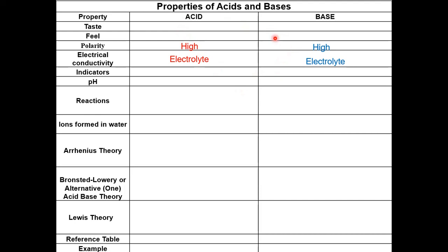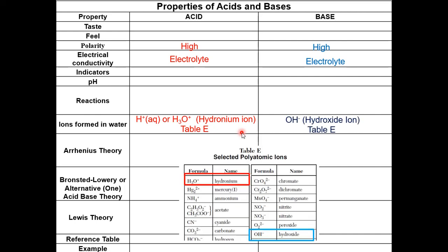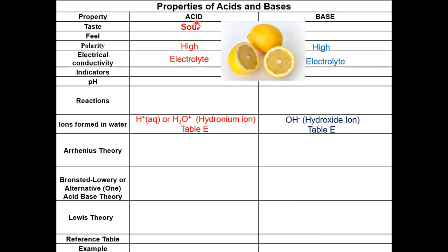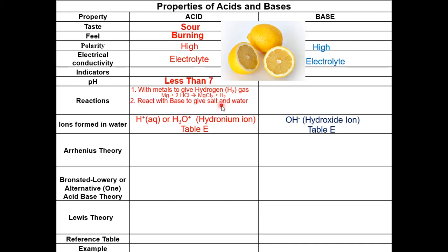Acids and bases have high polarity and they are both considered electrolytes. When an acid is dissolved in water, the ion that forms is H⁺(aq), or hydronium. For a base, it is hydroxide. Both these ions can be found on Table E in your reference table. Acids taste sour, like citric acid in lemons, and they have a burning feeling. Acids have a pH less than 7. When acid reacts with metal, they give hydrogen gas. Acids react with base to give salt and water, and acids counteract the properties of a base.